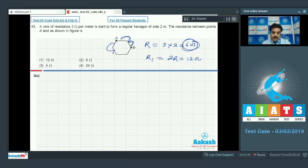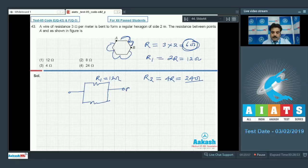For another portion: 1, 2, 3, 4 resistances. R2 equals 4 times R equals 24 ohms. So in this diagram, the value of R1 is 12 ohms